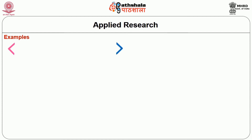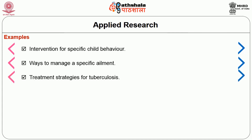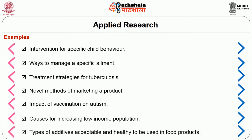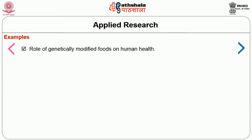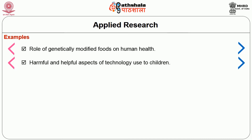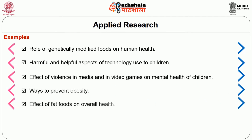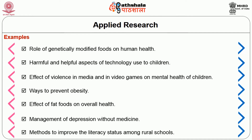Some examples include: intervention for specific child behavior, ways to manage a specific ailment, treatment strategies for tuberculosis, novel methods of marketing a product, impact of vaccination on autism, causes for increasing low-income population, types of additives acceptable and healthy to be used in food products, role of genetically modified foods on human health, harmful and helpful aspects of technology used by children, effect of violence in media and video games on mental health of children, ways to prevent obesity, effect of fatty foods on overall health, management of depression without medicine, and methods to improve literacy status among rural children.